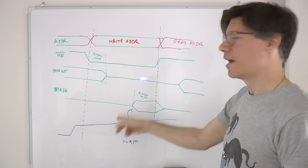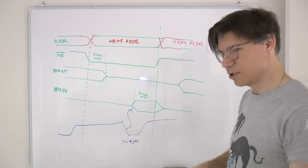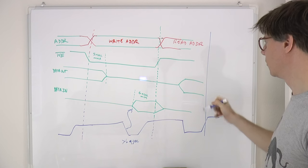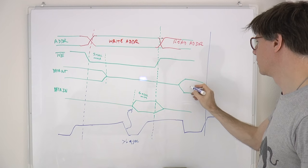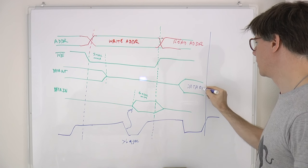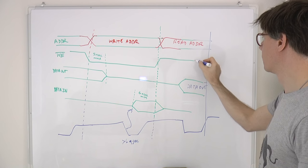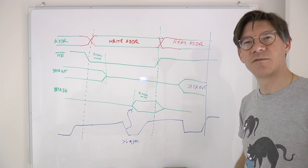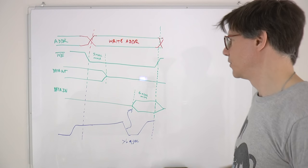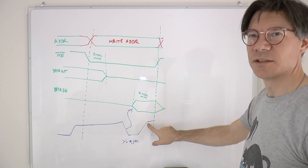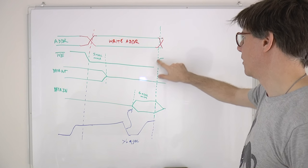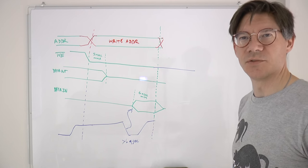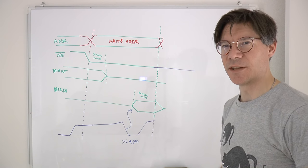If a write is followed by a read, that also seems to work. But if we have two write cycles in a row, then at the positive edge we're saying don't put write enable high — put it low. But if we put it low there's no write cycle, so that doesn't work. One possibility would be to move the negative edge on the write enable to after the negative edge of the clock pulse, but that would mean we're transmitting while the SRAM is still transmitting.